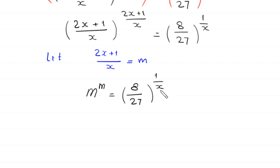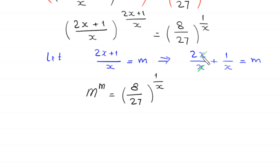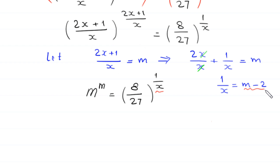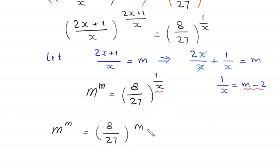Because we have 1 over x here, we simplify further to find its value. Writing (2x + 1)/x as 2x/x + 1/x gives 2 + 1/x = m, so 1 over x equals m minus 2. We now replace 1 over x with m minus 2, so the equation becomes m to the power m equals (8/27) to the power (m minus 2).